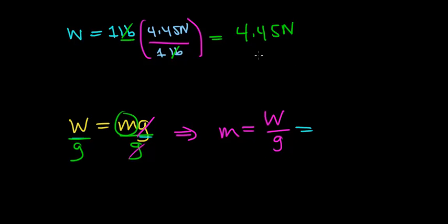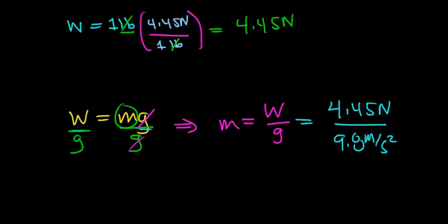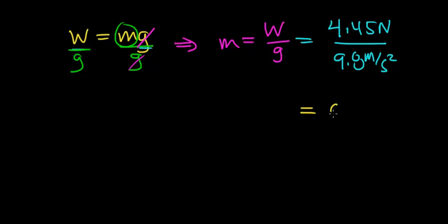Now, the next step is to plug in the information that we know. We know that the weight of one pound of fat is equal to 4.45 Newtons. And then we're going to divide that by 9.8 meters per second per second, or meters per second squared. Now, when you divide 4.45 Newtons by 9.8, you get 0.454 kilograms.